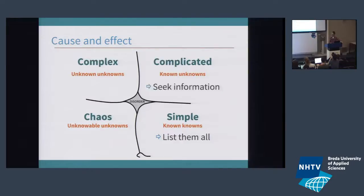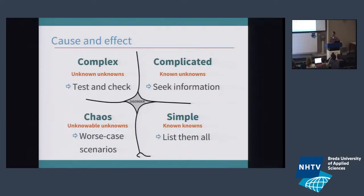For simple risk, you basically list them all. If you have more complicated risk, you seek information — you describe the risk and then seek some extra information about it. For complex risk, you can test and check. And for chaotic risks, you're going to assume the worst-case scenario — that's often then a good starting spot.